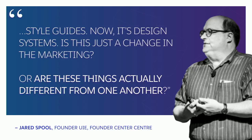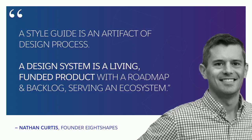There's a great podcast that Jared Spool does for User Interface Engineering where he interviewed Nathan Curtis — probably one of the most well-known design systems consultants in our industry. Nathan was asked: is 'design systems' just a marketing change from 'style guides,' or are they actually different? In a follow-up tweet, Nathan put it well: a style guide is an artifact of your design process, whereas a design system is a living, funded product with a roadmap, a backlog, and serving an ecosystem.